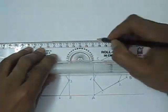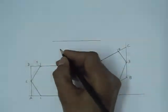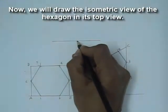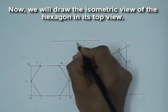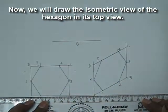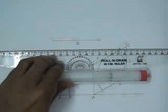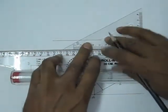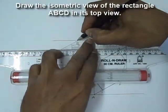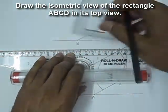Now we will draw the same hexagon in its top view. So we will start with the corner B. So again we will draw the rectangle in its top view. And then we will locate the points of the hexagon.